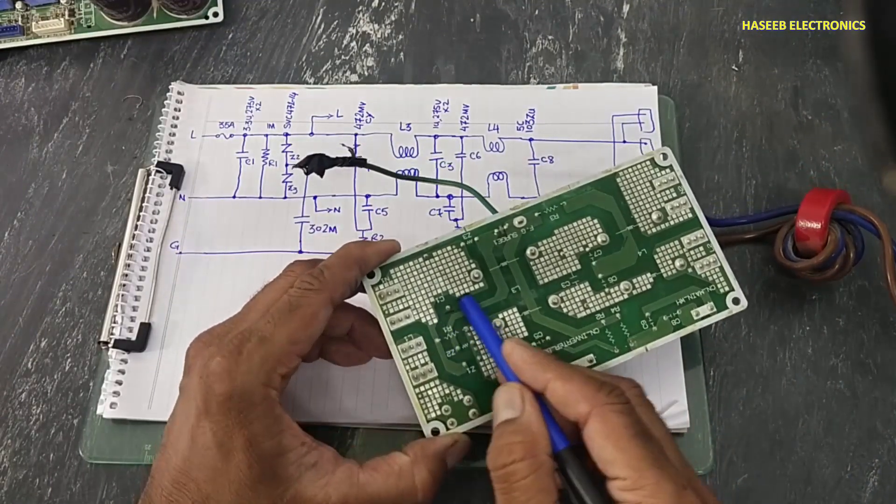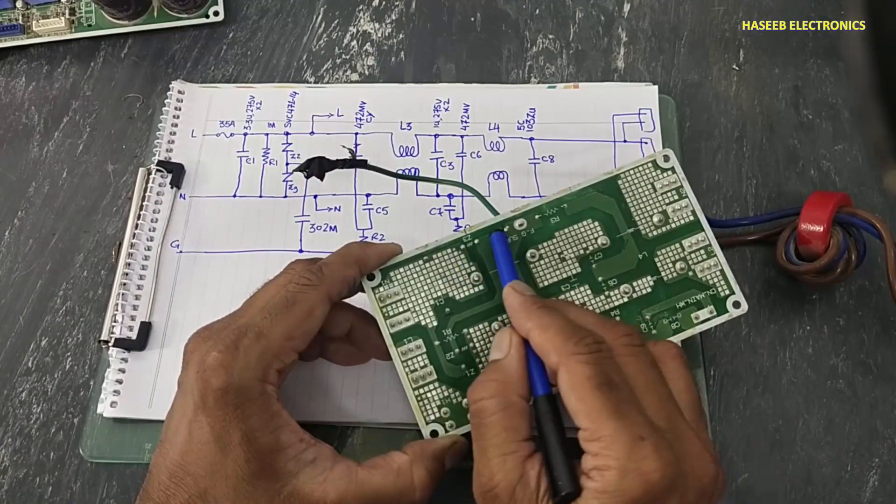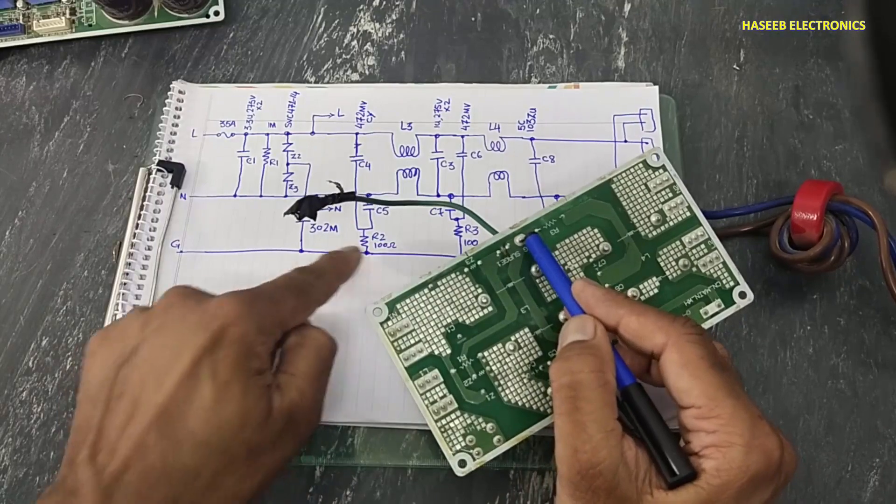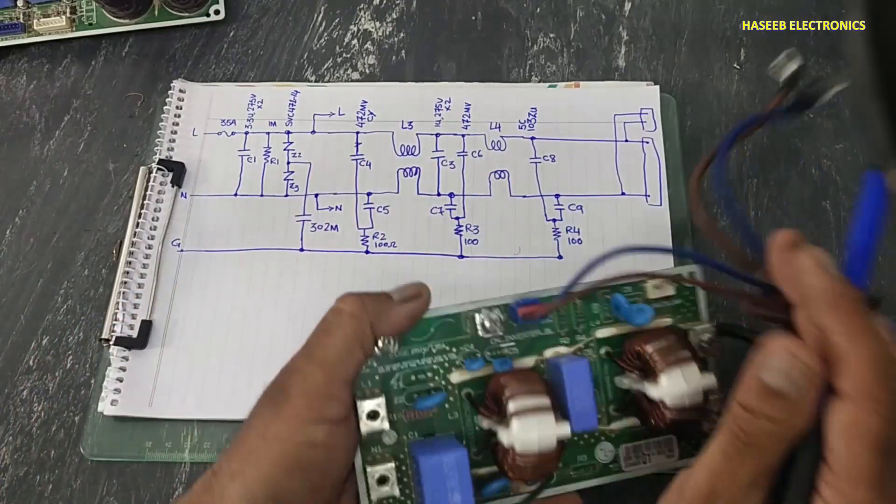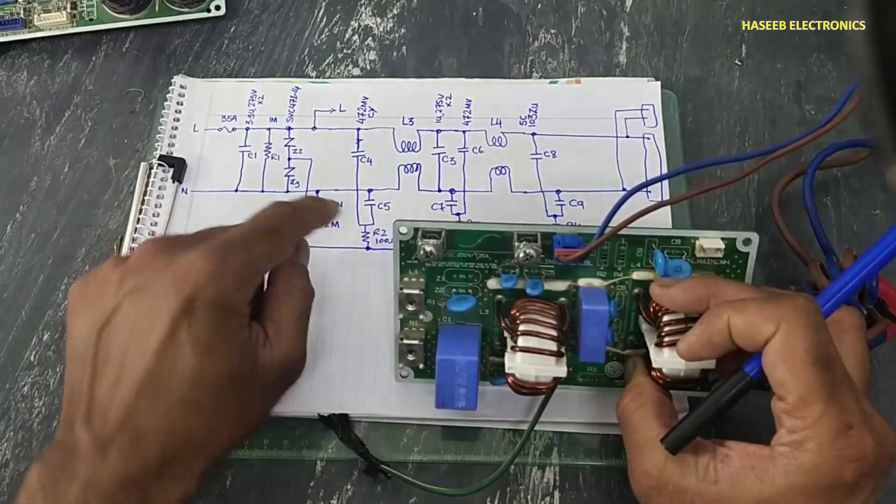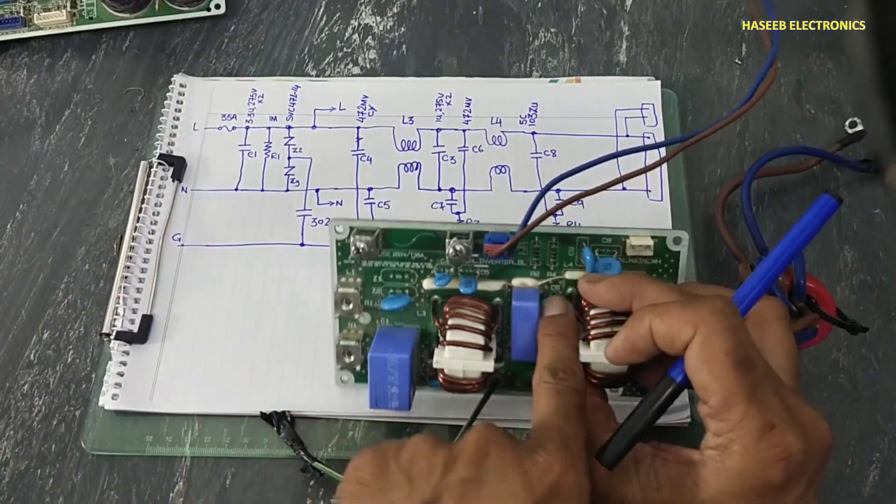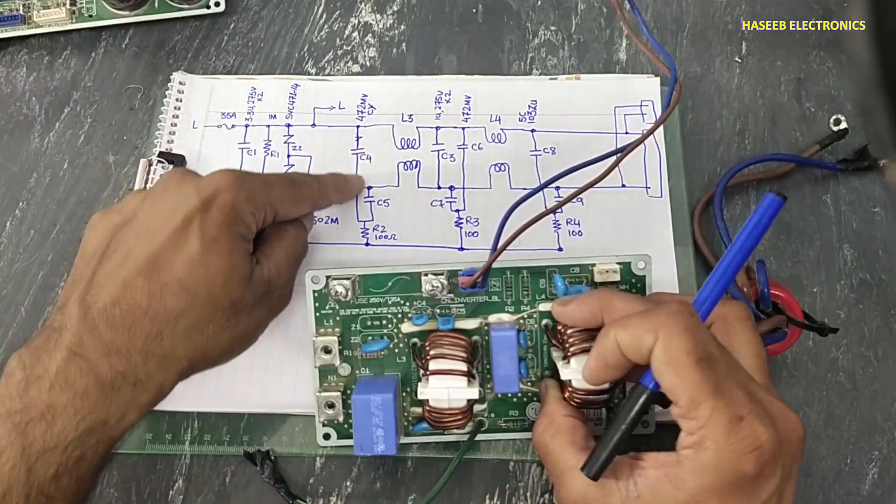Z2 is reaching here with Z3, and center point is connected to ground point that is from here. C4 C5 capacitors, these two capacitors connected in series with R2 resistance that is 100 ohm resistance. These are for common mode noises.